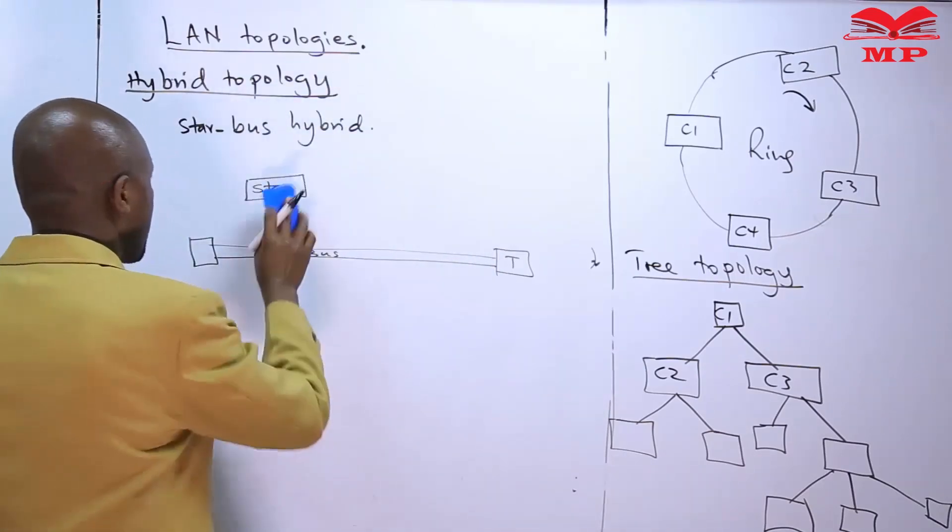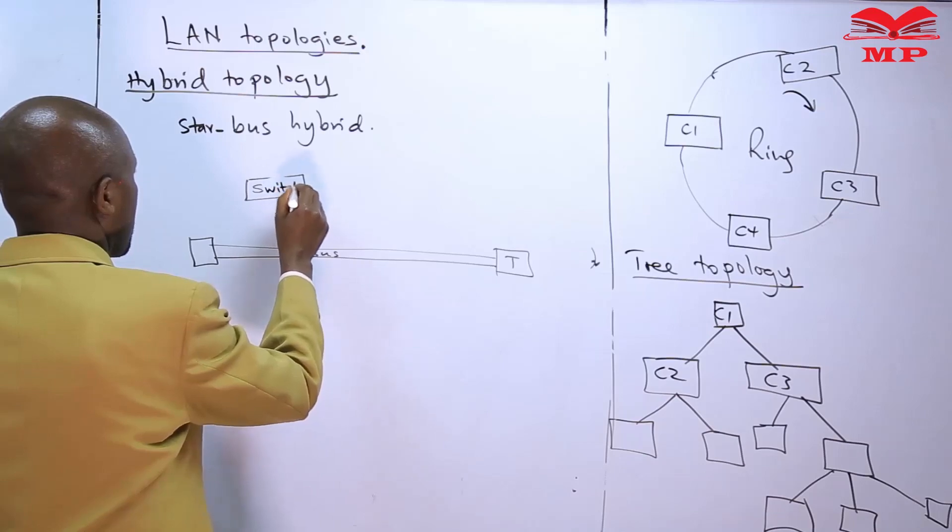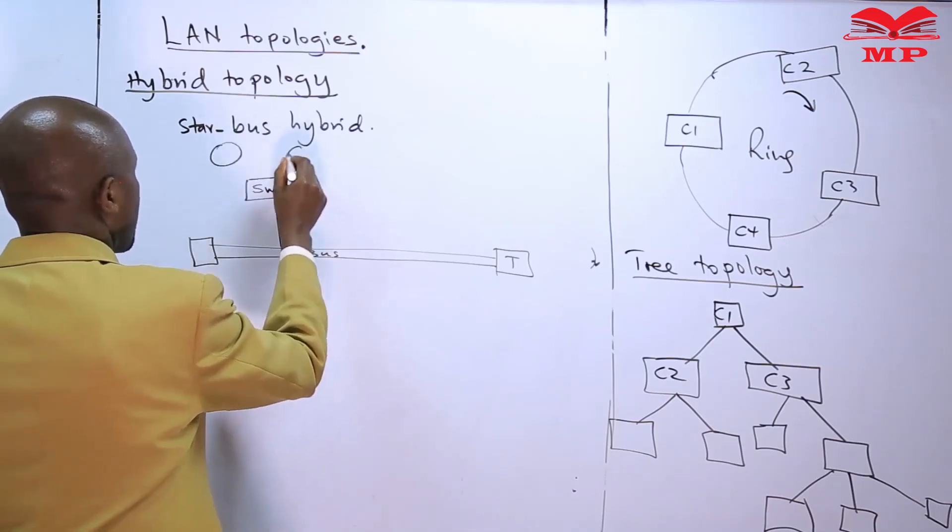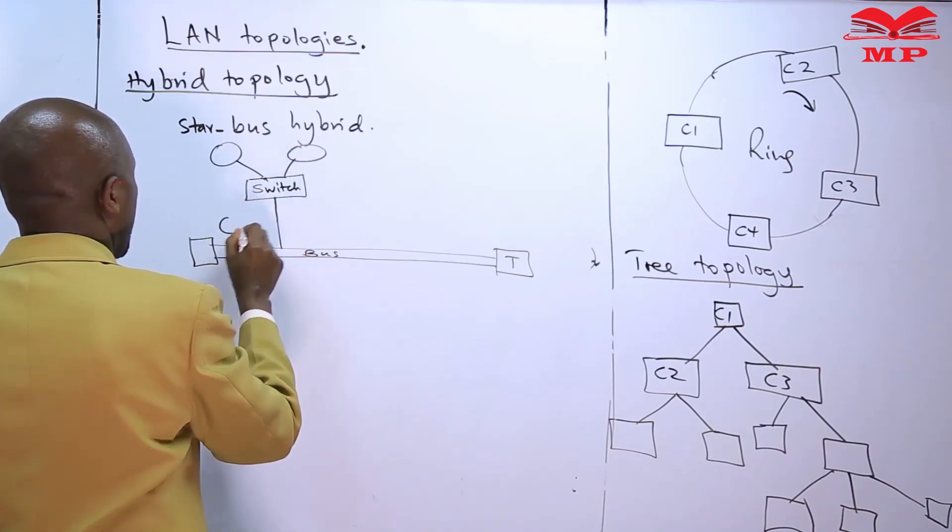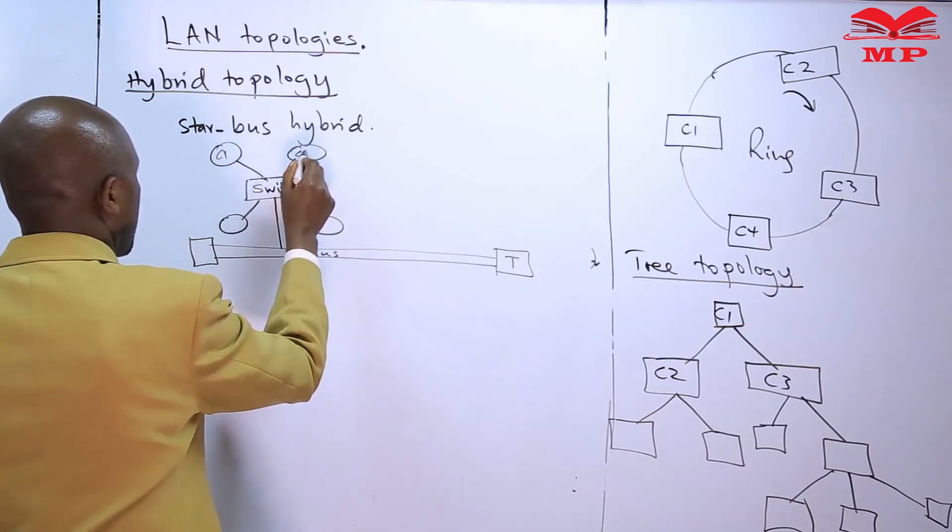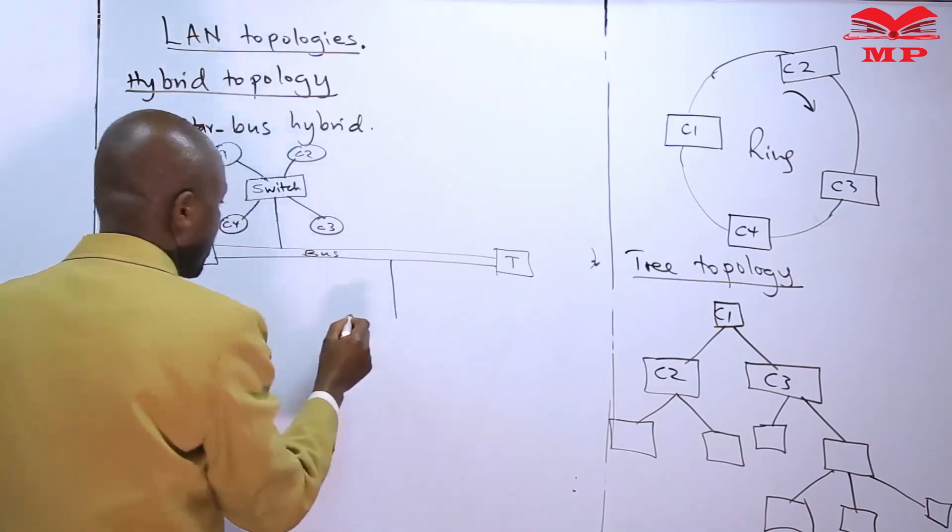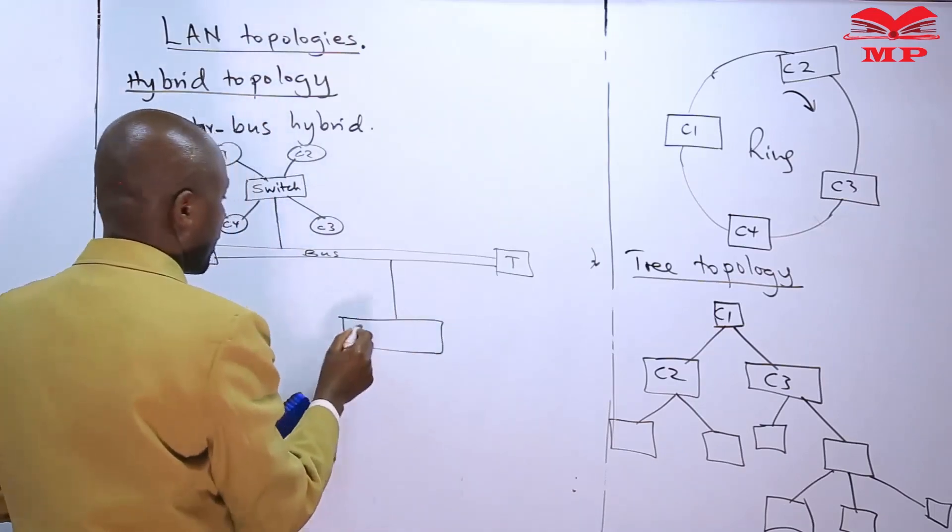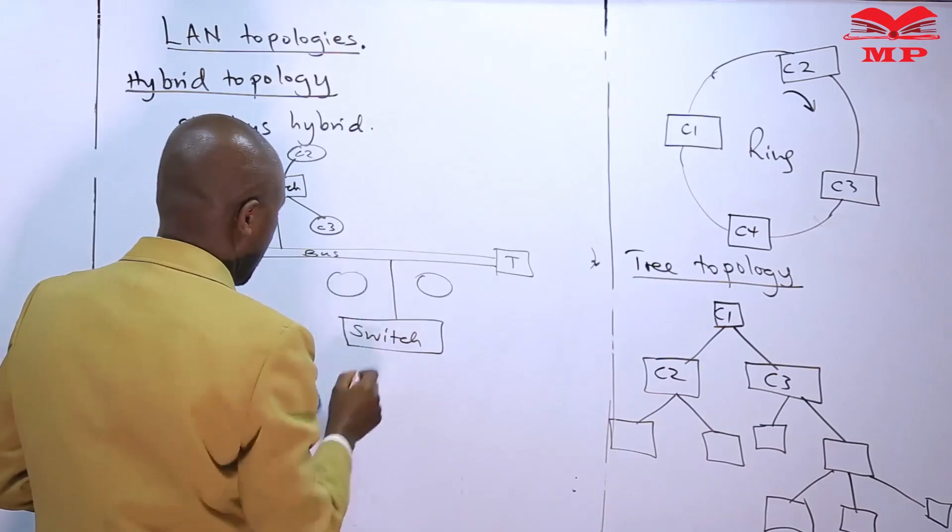And the switch, remember in the star we had that. We can call C1, C2, C4, and we also have maybe another switch, and we can have that is C1, C2, C3, C4, and C5.